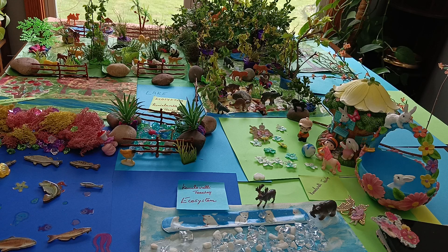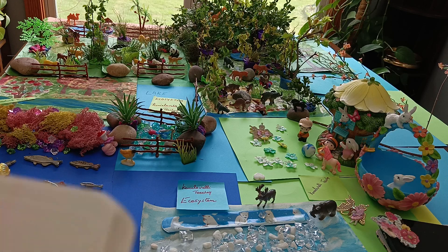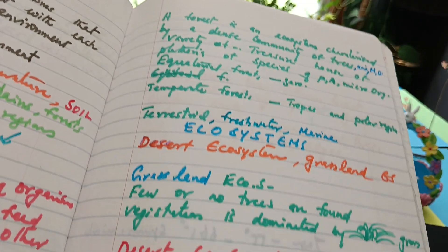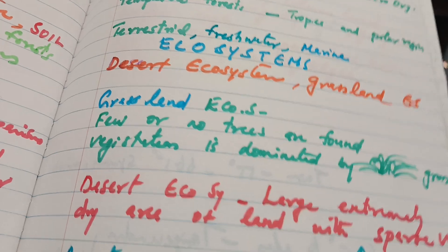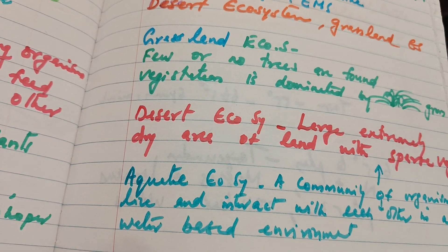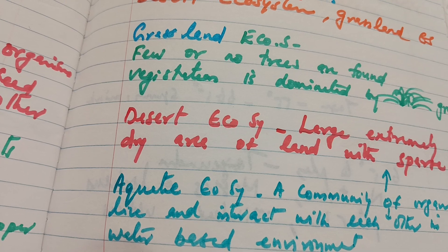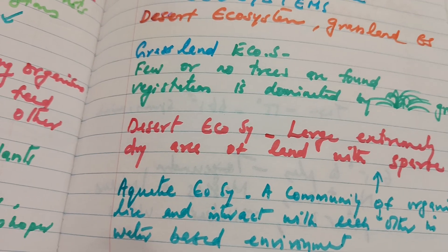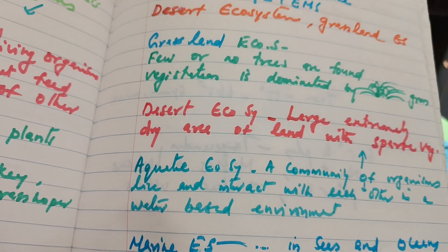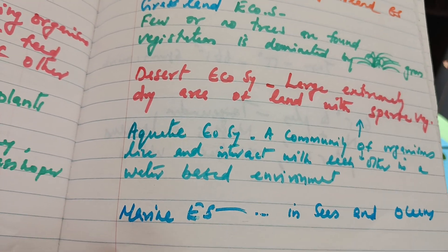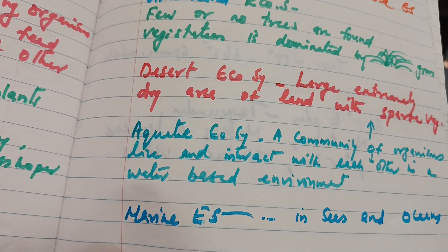Let us see what a grassland is: a community of organisms that live and interact in a grassland. In a grassland, few or no trees are found and vegetation is dominated by grass. For the desert ecosystem, deserts usually get less than 25 centimeters of rainfall. It is a community of organisms that live and interact in a large, extremely dry area of land with sparse vegetation.